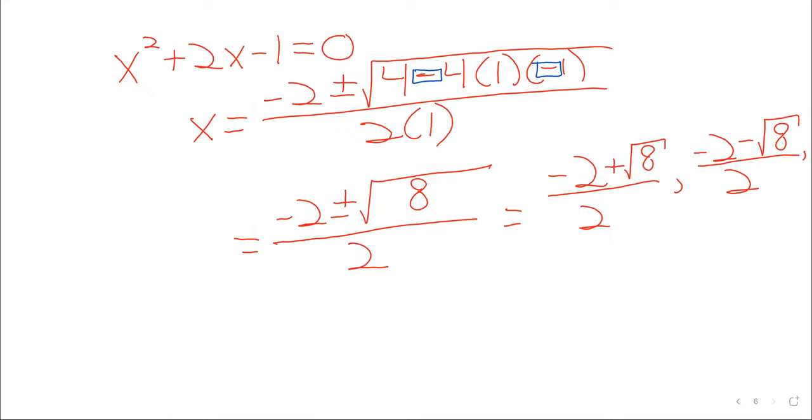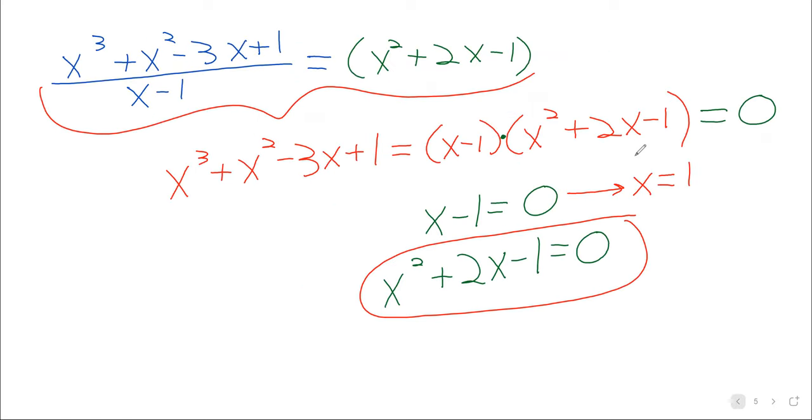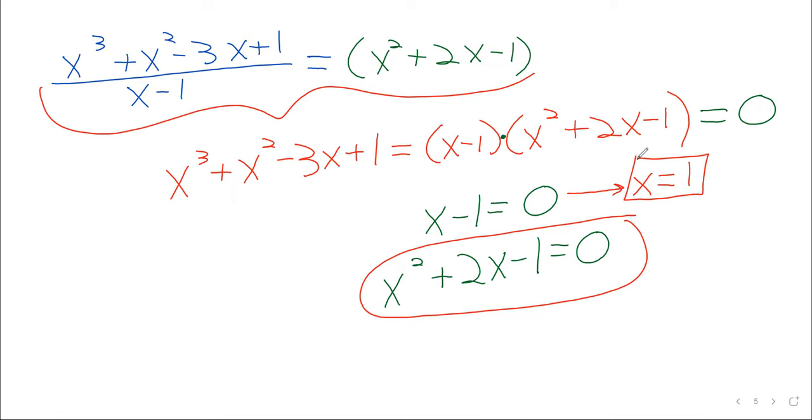So negative two plus the square root of eight over two comma negative two minus the square root of eight over two. If we now plug in the nice root, the root we already knew when we sort of started this whole process. We now have all three roots of this polynomial.